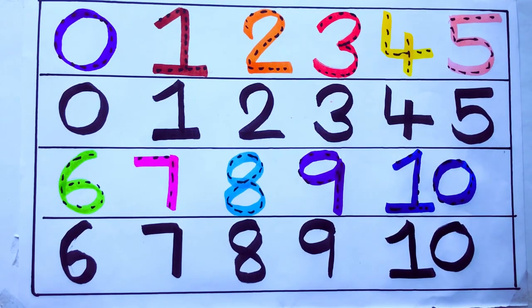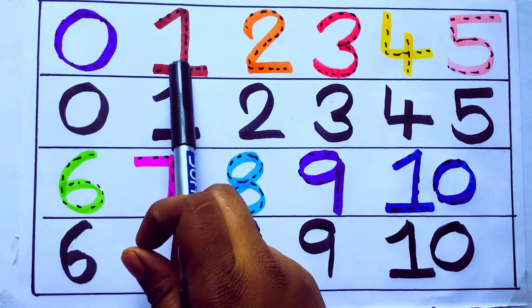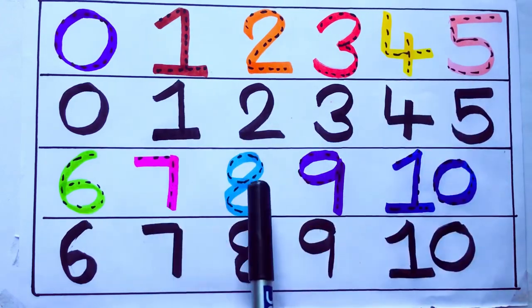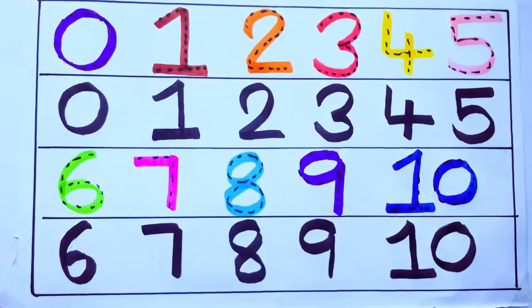One second learning numbers: 0, 1, 2, 3, 4, 5, 6, 7, 8, 9, 10. Okay, bye kids.